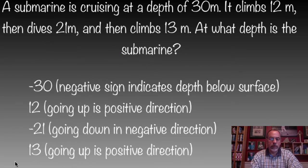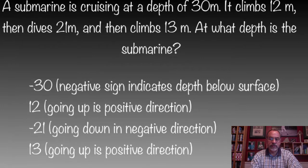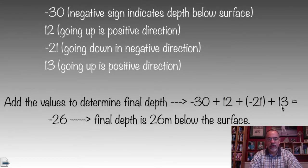So mathematically, we would write that as an addition problem. It starts out at negative 30. It climbs 12, that's plus 12. And then it goes down 21, so that's plus a negative 21. And then it goes up 13, so that would be plus 13, moving up. And then we apply what we learned about adding positive and negative numbers in order to do that.